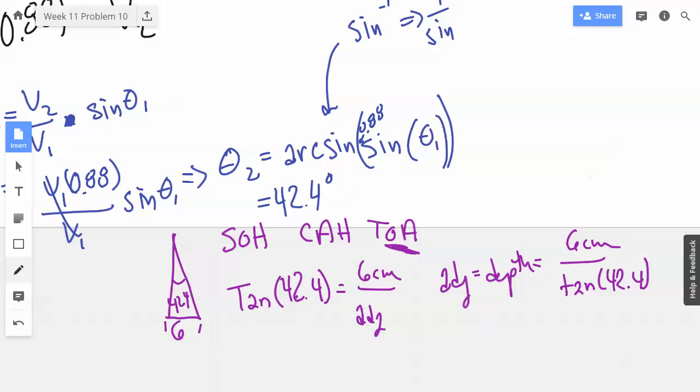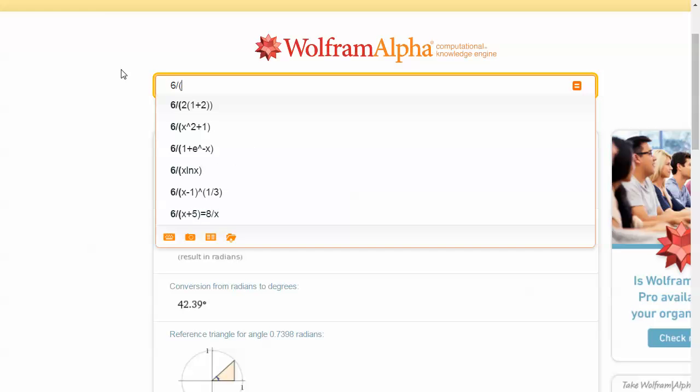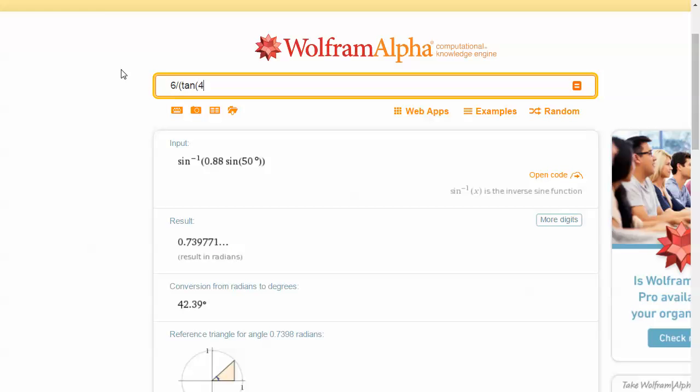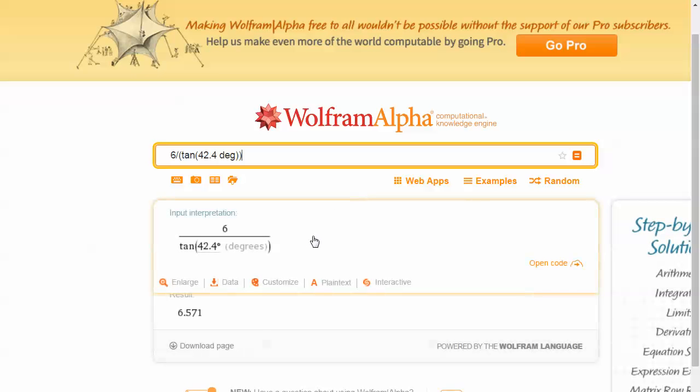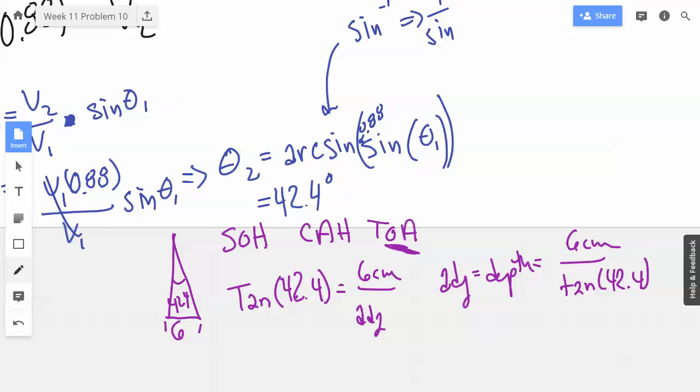So let's see here. I'll do six divided by quantity tangent 42.4. I always like to challenge Wolfram, push the limits. It did figure it out. Result, 6.57. So we have 6.57 centimeters.